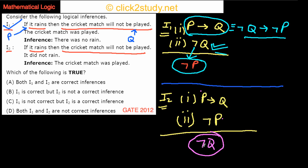So I2 is not correct. Only I1 is correct and I2 is not, which means option B is the correct choice.